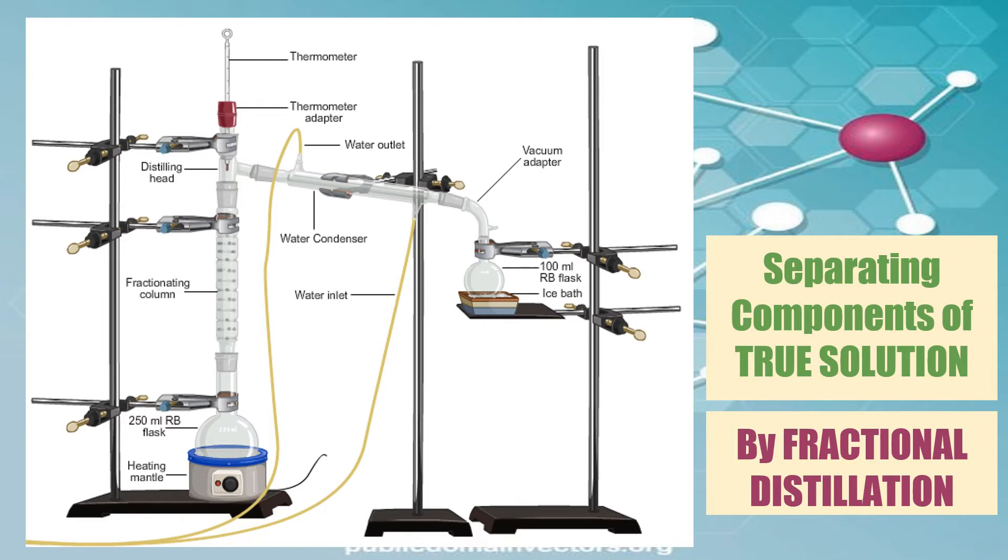When vapors of a mixture are passed through the fractionating column, because of the repeated condensation and evaporation, the vapors of the liquid with the lower boiling point first pass out the fractionating column, condense, and are collected in a receiver flask.